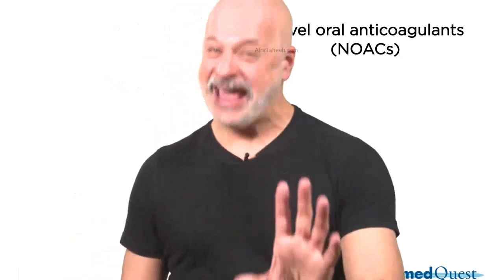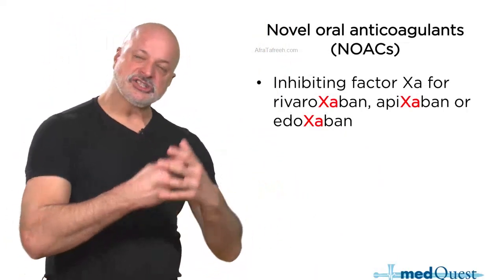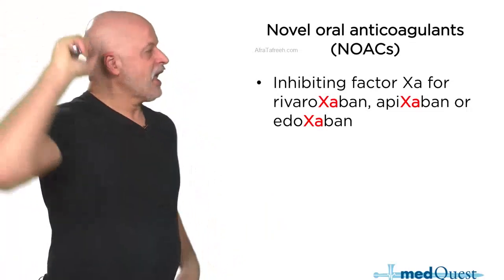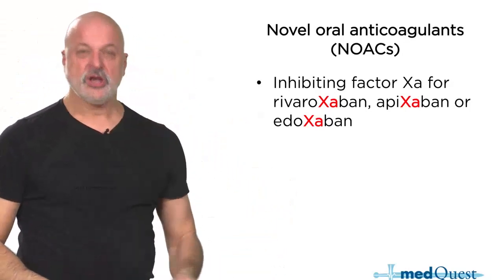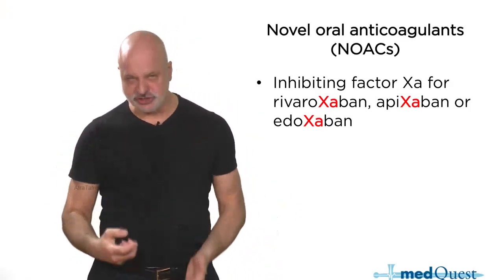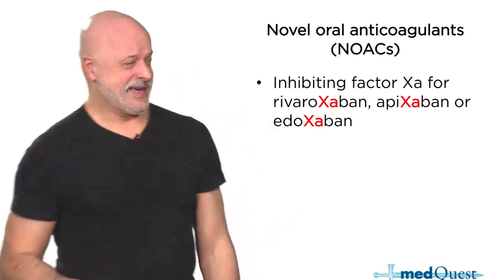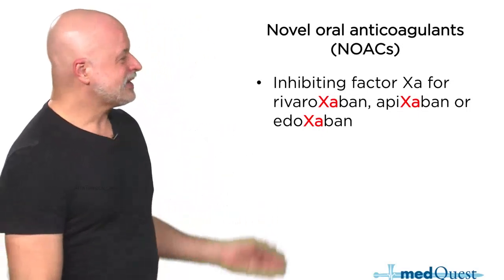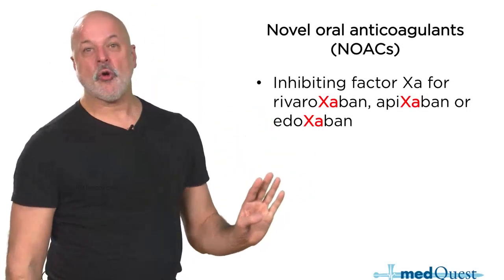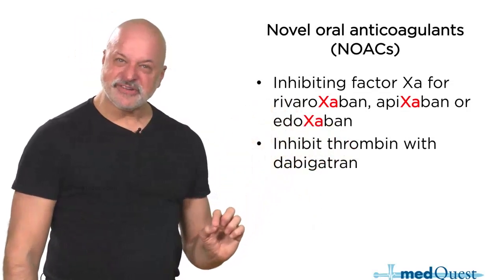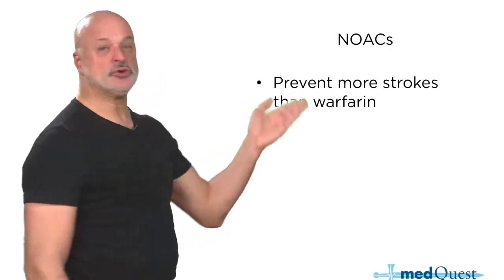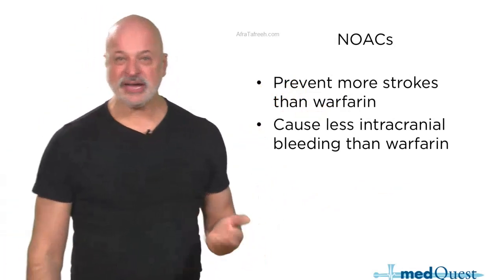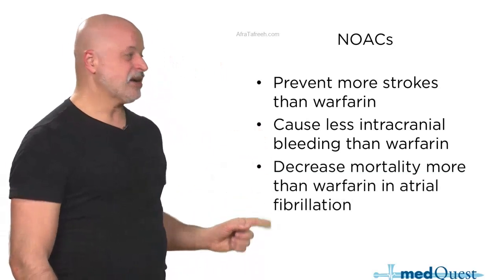The people who are going to have the hardest time on the exam are the ones who answer based on what older doctors did — still using heparin and warfarin. Warfarin is a drug that should go away except for metal valves and mitral stenosis. Rivaroxaban, apixaban, edoxaban, and dabigatran all have better efficacy and fewer adverse effects compared to warfarin, and warfarin should not be used except for metal valves or mitral stenosis.